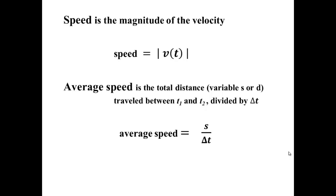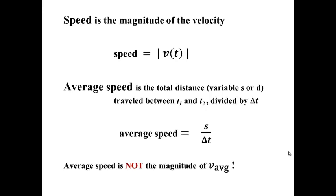Speed is not velocity. Your calculus book uses speed as if it is velocity, but it is not. Speed is the magnitude of the velocity — a very technical quantity; it's the magnitude of the vector if velocity is a vector. Average speed is the total distance divided by the time over which the movement took place. The numerator is the total distance traveled, not the displacement. Because of that, average speed is not the magnitude of average velocity. If you go in a circle and come back to the origin, your average speed will not be zero, but your average velocity will be zero.